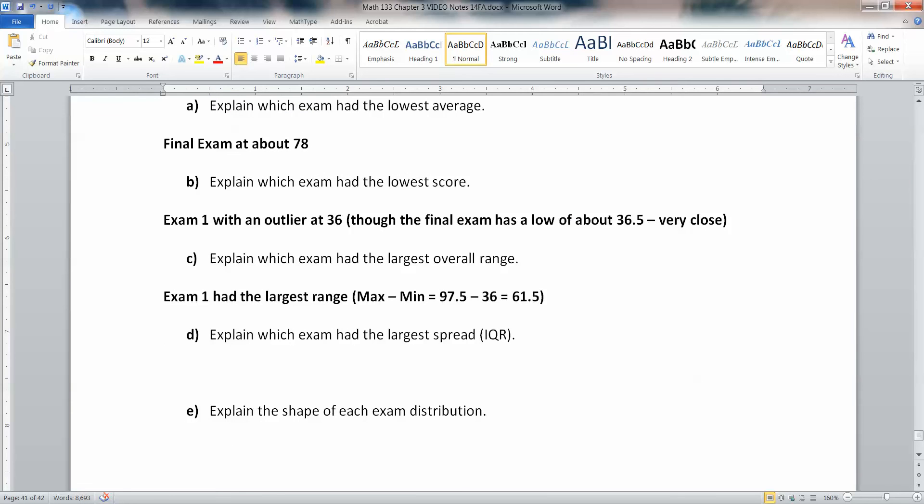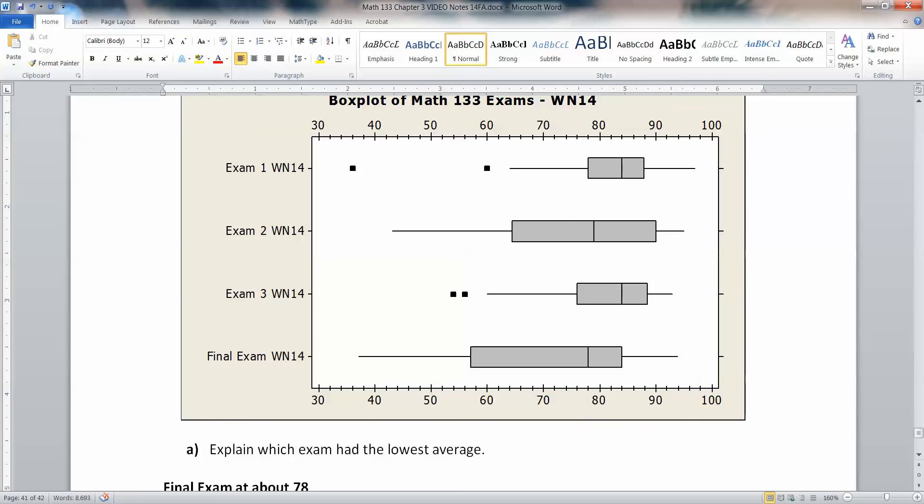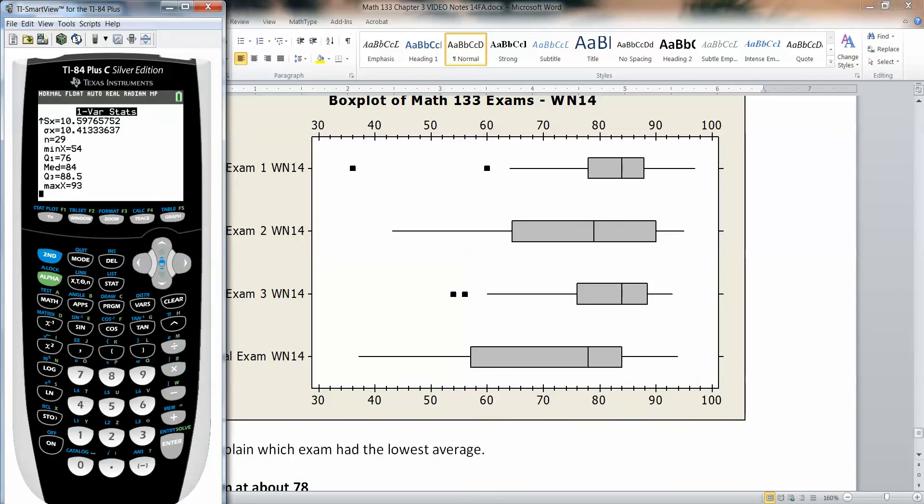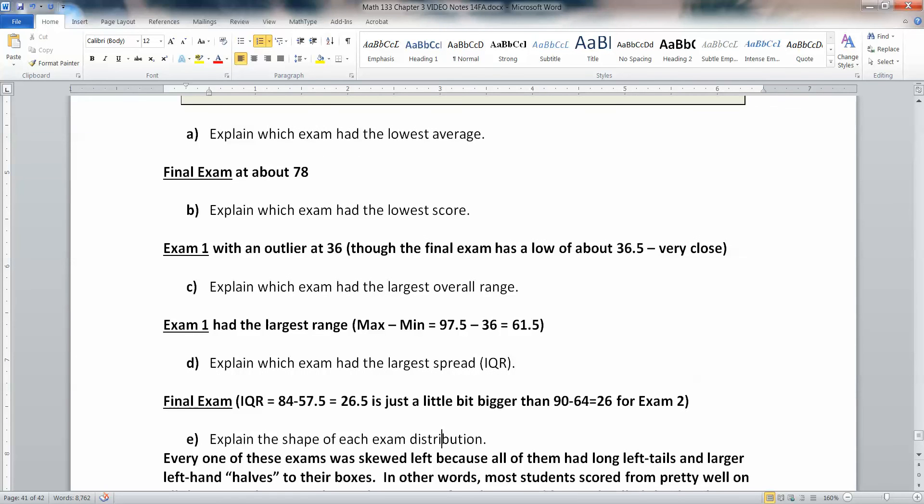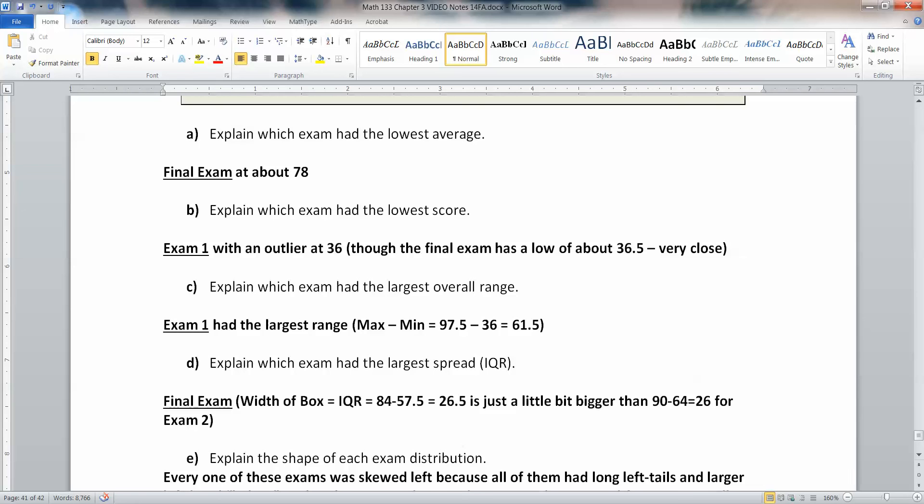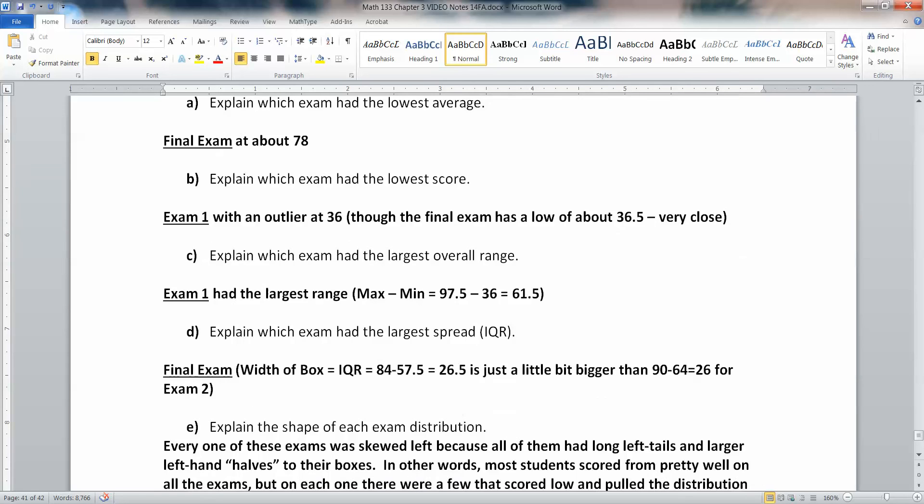Which exam had the largest spread in terms of IQR? So instead of the largest range, the largest IQR. Well, that's going to be either exam two or the final. So you've got to kind of look here and say 90 take away 64 or 84 take away 57 and a half. Let me find those calculations. So let me grab the calculator. 90 take away 64. So for exam two is 26 and then 84 it looks like take away about 57.5. That's 26 and a half. So the final exam is just a little bit bigger in terms of spread. So let me write that up. There we go. So the final exam has just a little bit bigger box. And remember, that's what this is. This is the width of the box, which is your IQR. And it's just a little bit bigger than the 90 minus 64, which is 26 for exam two.